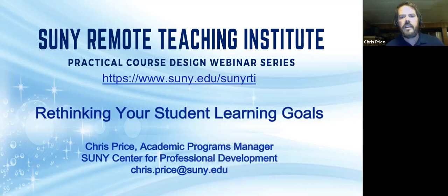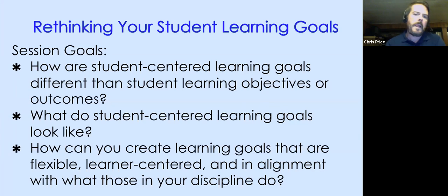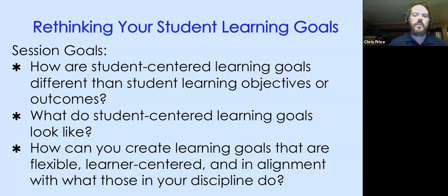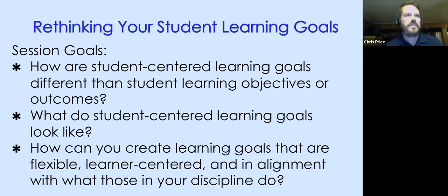Our goals for today are as follows. First, we're going to talk about how student learning goals are different than student learning objectives or outcomes. Then we'll spend most of the time on what student-centered learning goals look like and how you can create them for your courses so that they're in alignment with what those in your discipline do. We're trying to take the very technical, complicated content ideas in our disciplines and translate them for students so that they can learn them effectively as novices, at an appropriate level for where your students are.